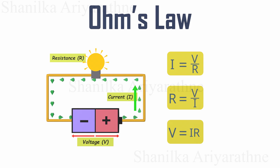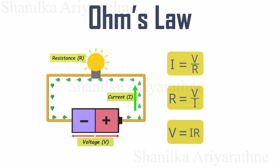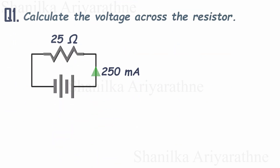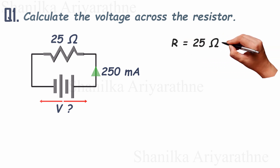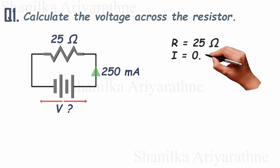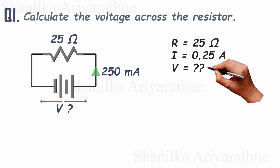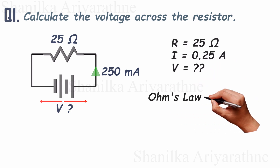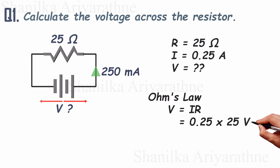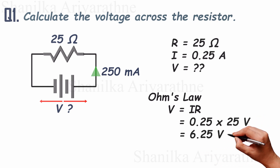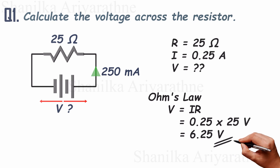You should be able to use all three forms appropriately depending on the problem you're solving. Now let's solve some problems using Ohm's law. Calculate the voltage across this resistor. The resistance of the resistor is 25 ohms, and a current of 250 milliamperes goes through the circuit, which we can write as 0.25 amperes. Using Ohm's law — voltage equals current times resistance — and substituting the values, the voltage across the resistor is 6.25 volts.